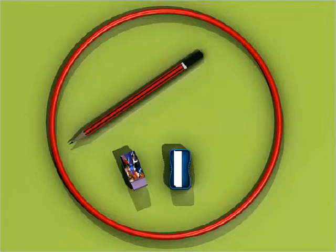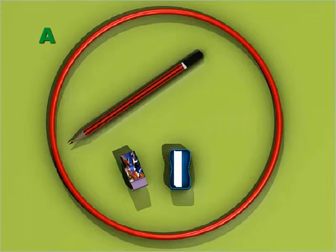Consider a set A containing an eraser, a pencil and a sharpener, and another set B containing a pen and a book.